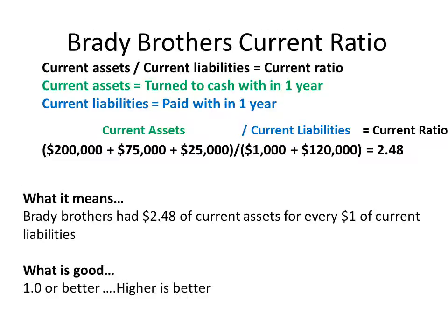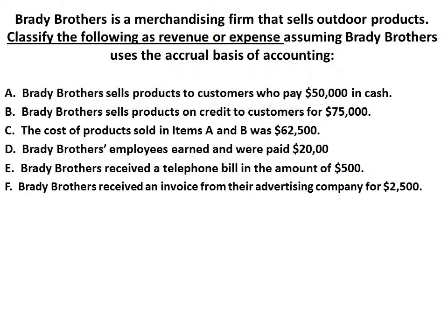What is good? 1.0 or better — higher is better. Obviously, the more assets you have, the more you can pay your short-term liabilities. It all depends on the industry. If you're a company that is based on sales, you're going to have a lower one. McDonald's, for example, is based a lot on sales because that's how they pay off their liabilities. Apple is going to have a higher one because they're not as heavily dependent on turning inventory over as McDonald's is.